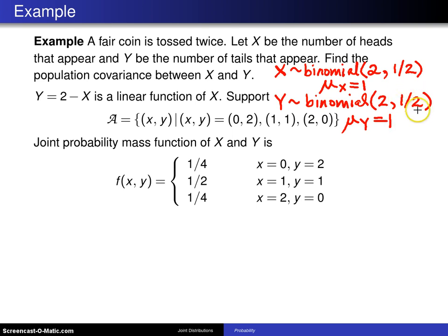Again, one half is the probability of tossing a tail. One half is the probability of tossing a head because you are looking at a fair coin.